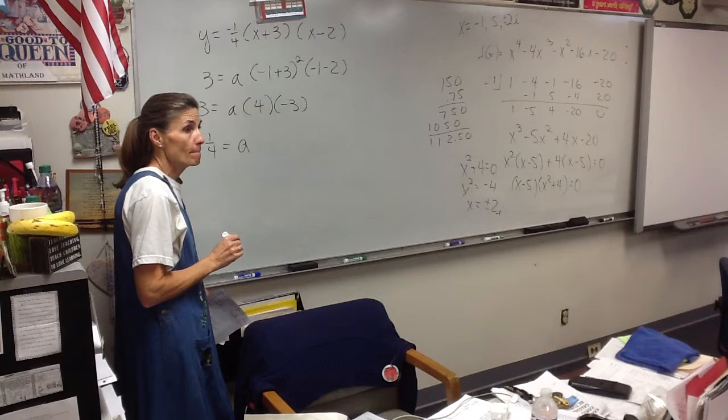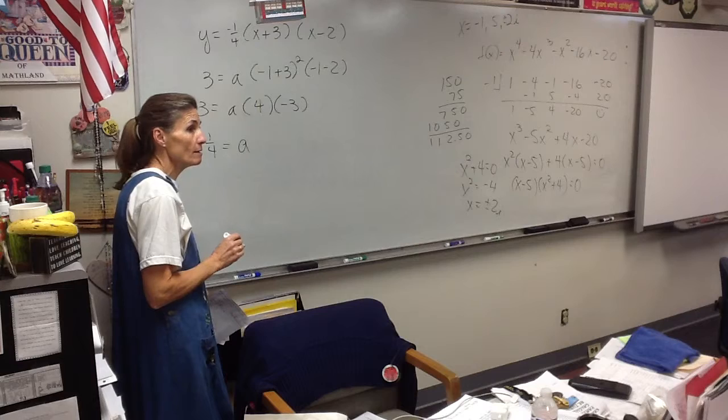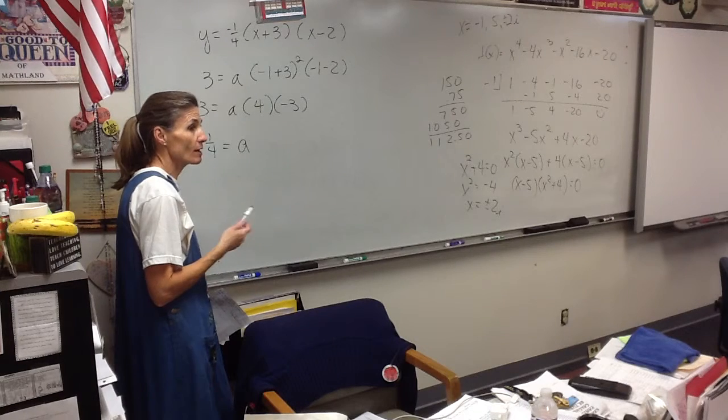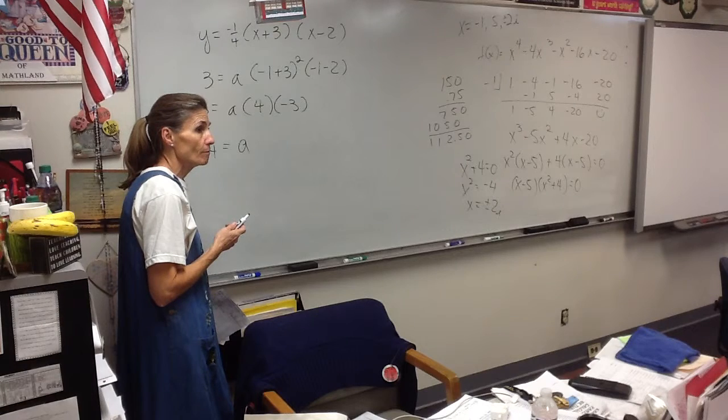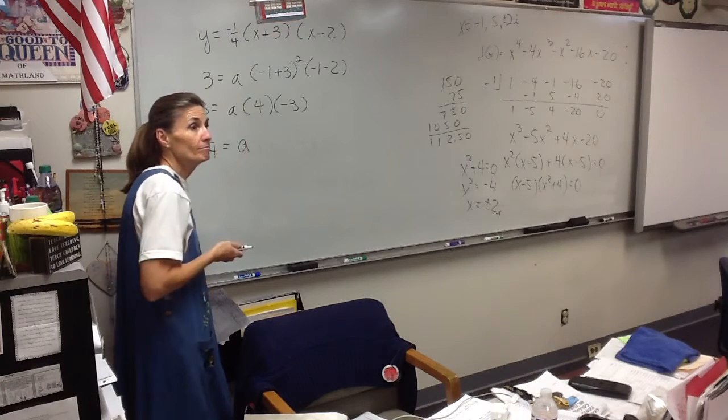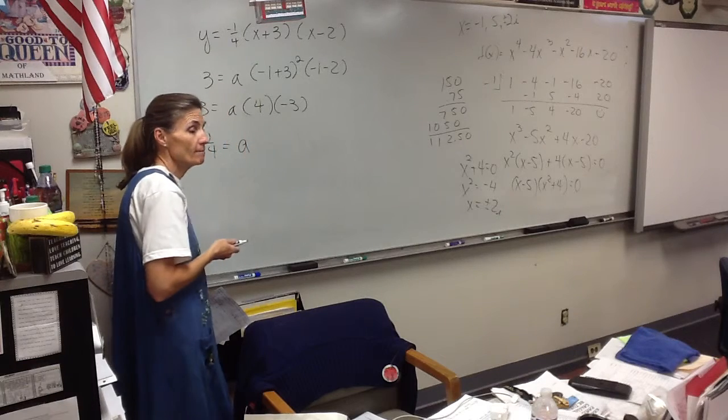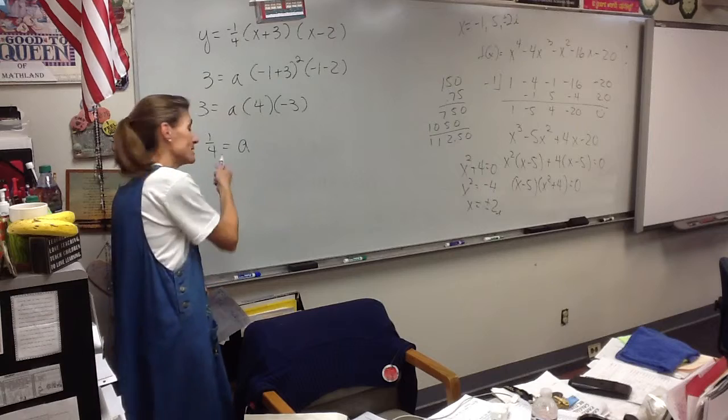This number is going to control how high that curve goes so that it picks up the point negative one, three. So three equals a times two squared times negative four, which is negative twelve. So a is negative one-fourth. So this would be your equation with the negative one-fourth right there. It's not negative one-half, it's negative one-fourth.